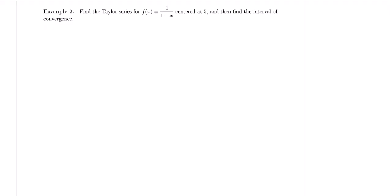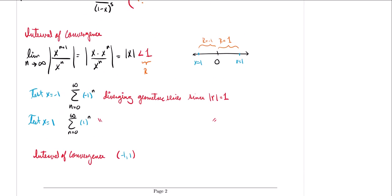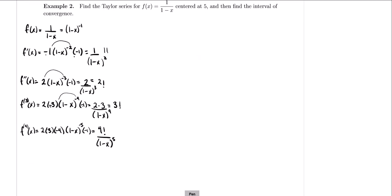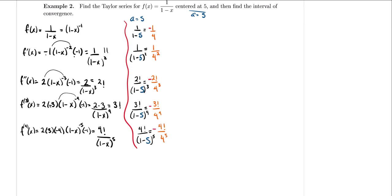Now we want to find the Taylor series for f(x) = 1/(1-x) centered at 5. We already figured out all the derivatives in our previous problem, so let's evaluate them at a = 5. The coefficients are a little different this time because in the denominator we have 1 - 5 = -4. So f(5) = -1/4. For f'(5), since we're squaring (1-5), it becomes positive: 1/4². The signs alternate depending on whether the power of (1-5) is odd or even.